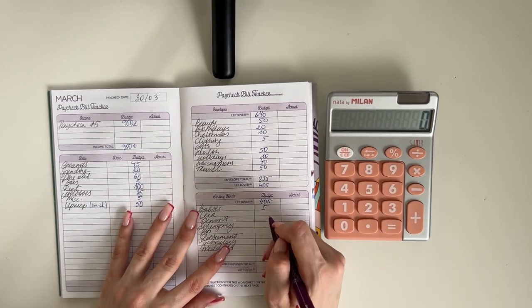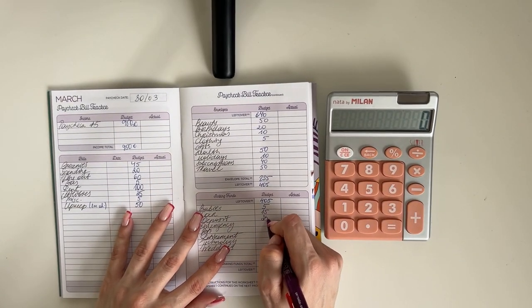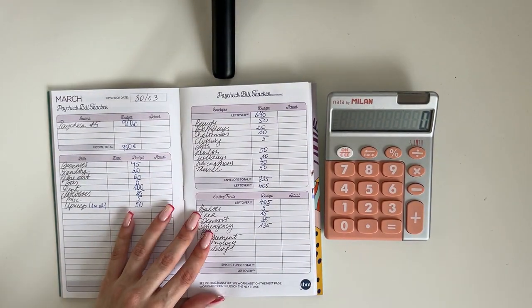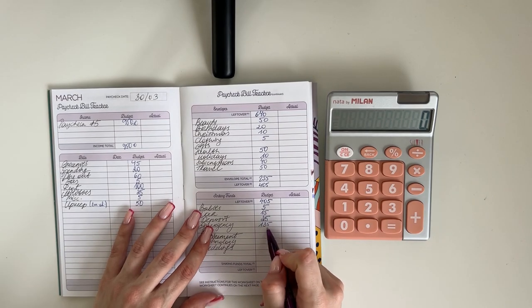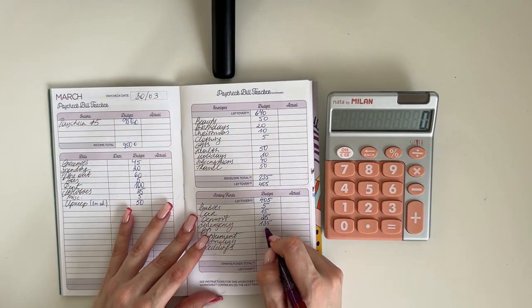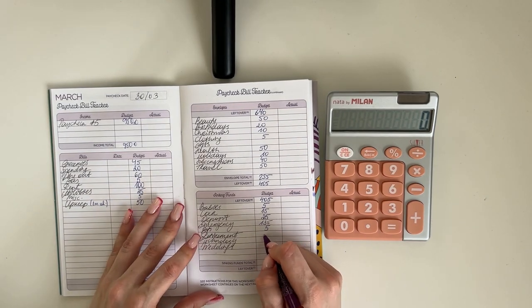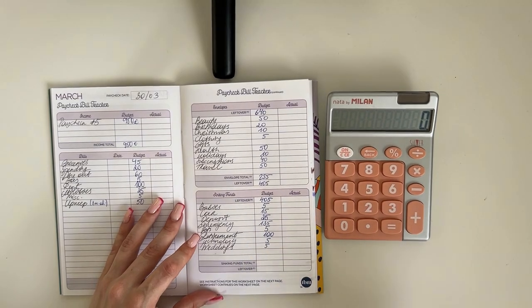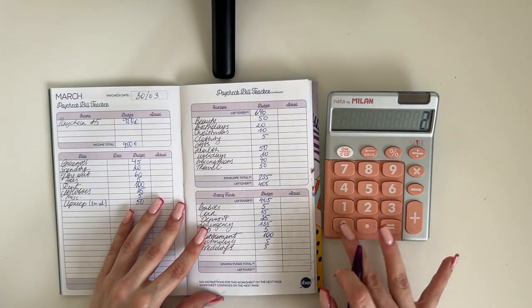So in long-term sinking funds, we're putting five into babies, 15 into car, 25 in deposit. We're putting 135 in emergency, and if I calculated everything correctly, that should be the final amount we need before we reach our goal of 3000, so that's very exciting. Five is going into pets, 100 in retirement, and five in technology and weddings each.